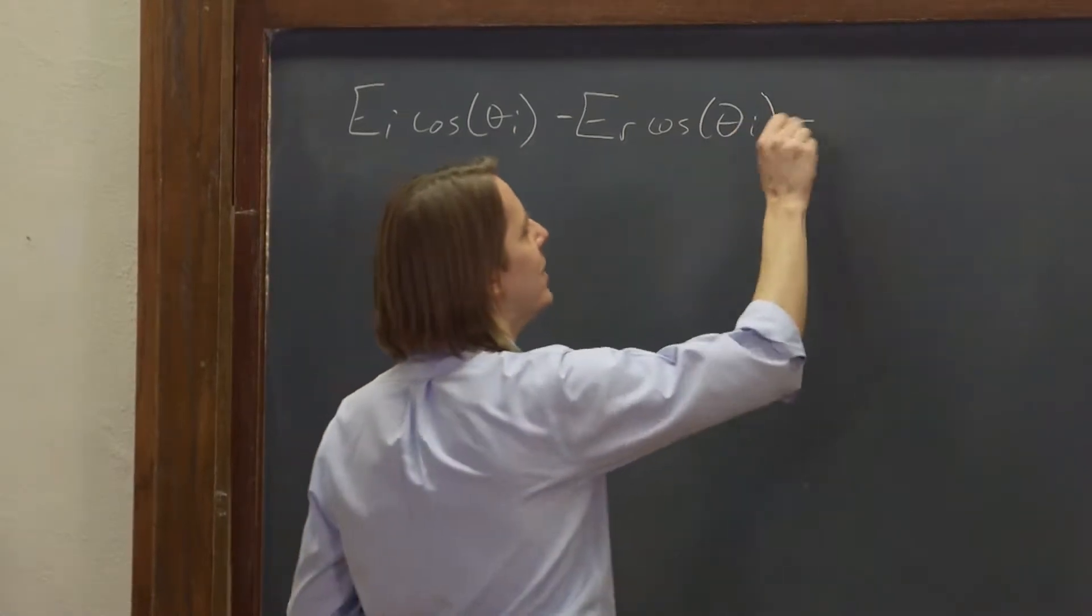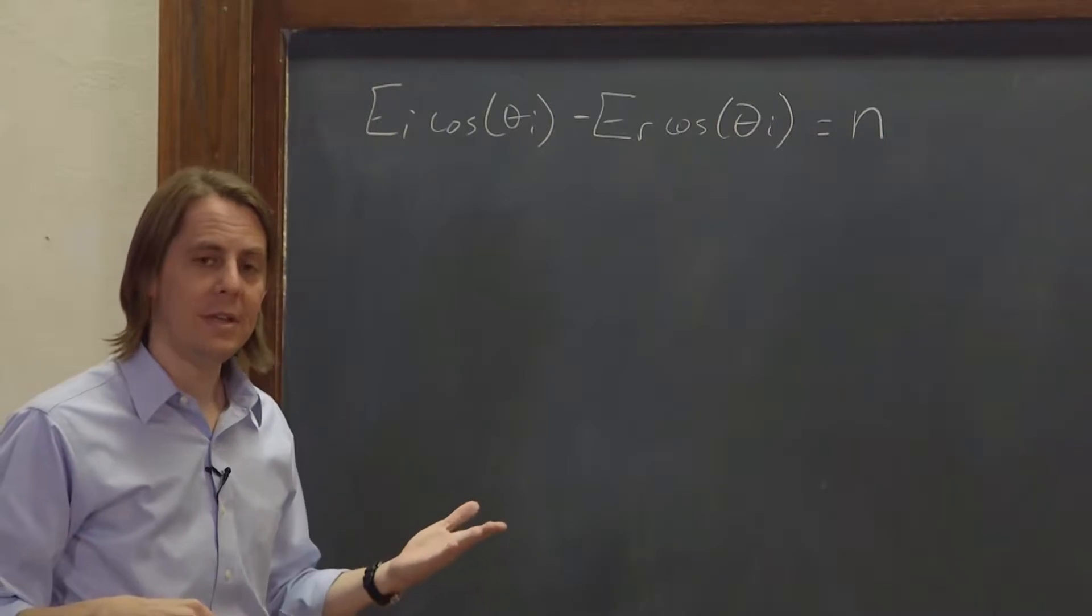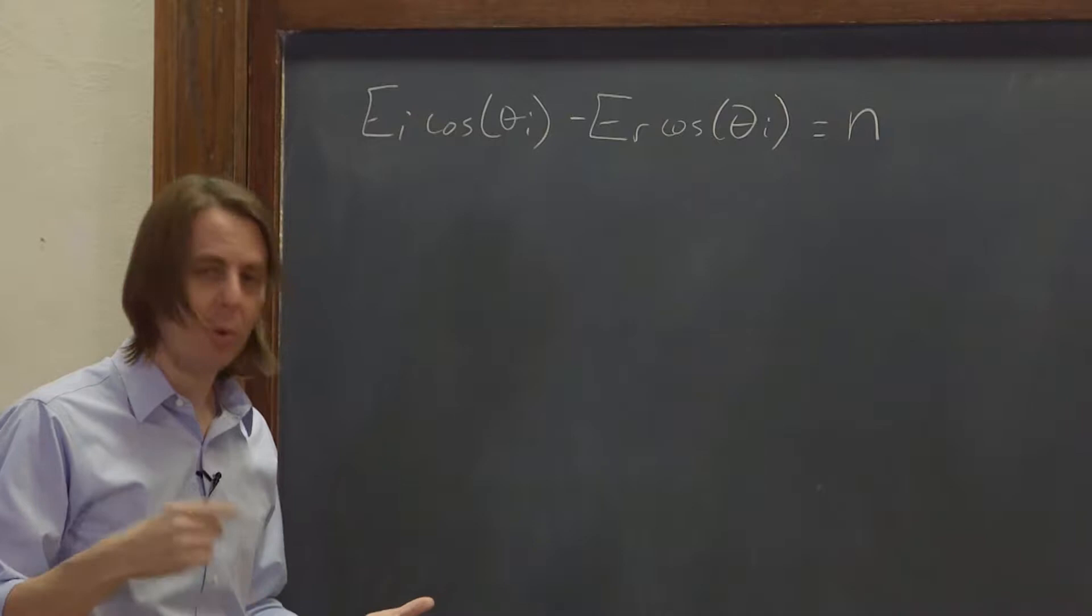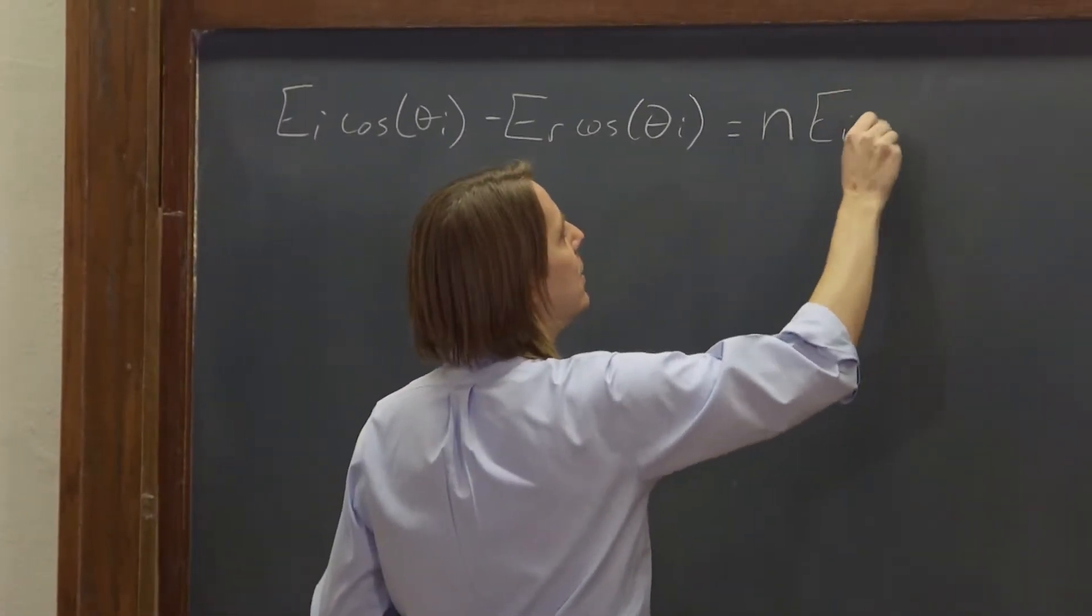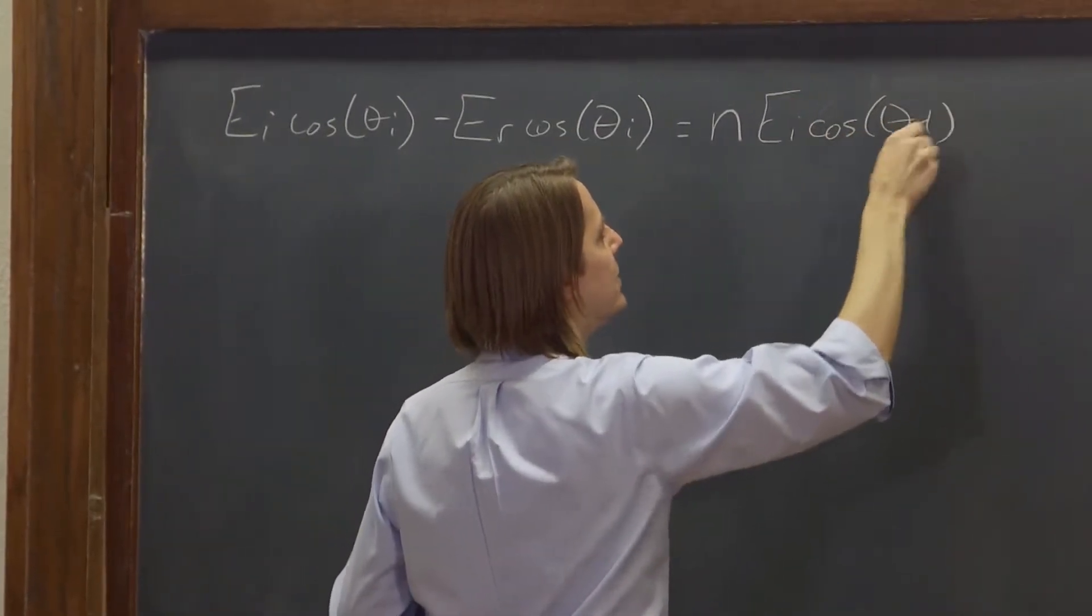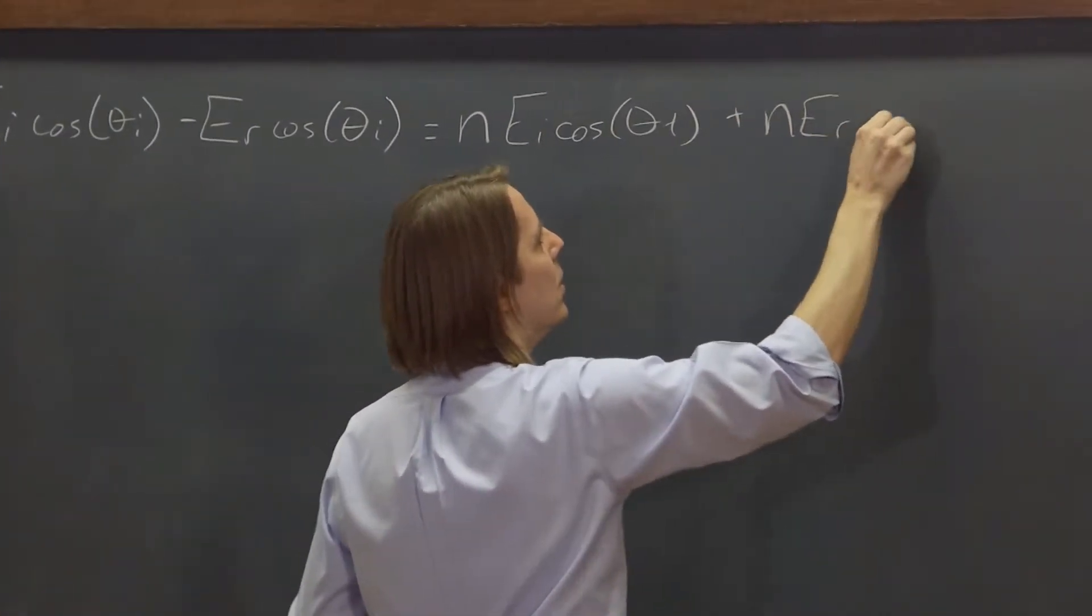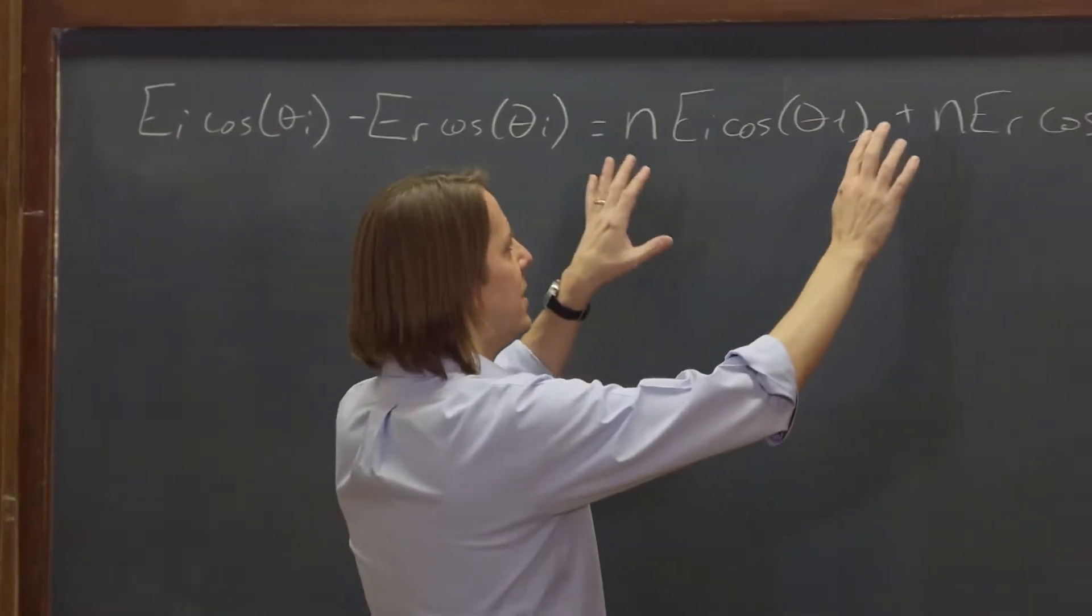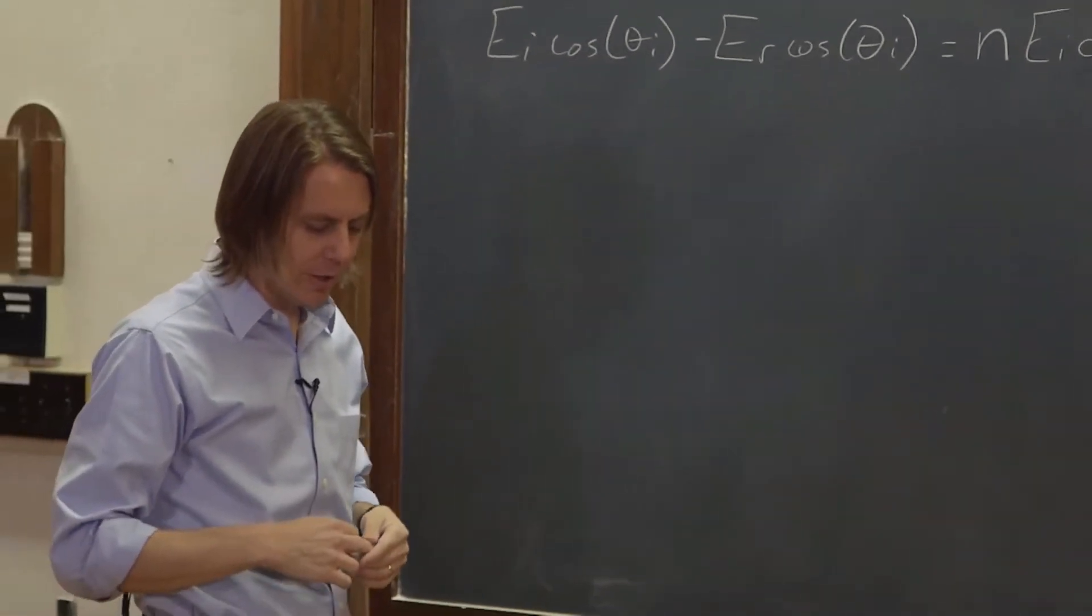What we're going to do then is plug in from the first one. Instead of ET, we're going to write it in terms of EI and ER, but we'll leave the cosine θT's of course. So this will become n EI cosine θT and it's plus n ER cosine θT. All we did was exchange ET for EI plus ER from the continuity of the electric field at the interface.